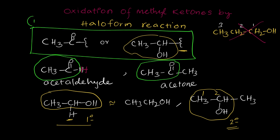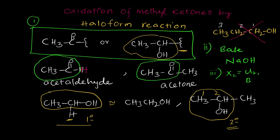Now I will give the conditions: which type of reaction is required. The requirements for the haloform reaction are: first, the substrate (methyl ketone or appropriate alcohol); second, a base — for example, NaOH; and third, a halogen. That is why X₂. This X₂ may be chlorine, bromine, or iodine. These are the three requirements for the haloform reaction.